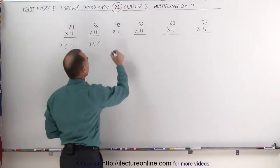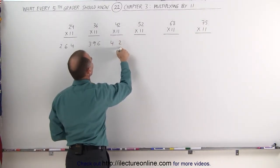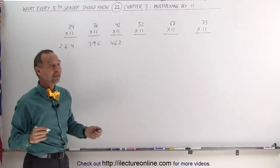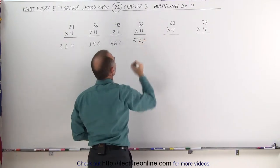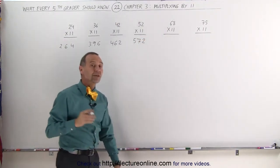How about 42 times 11? Write the numbers like this, add them together, you get a 6, 462. How about 52? Separate the two numbers, add them together, you get 7, it's 572. Those are pretty neat tricks.